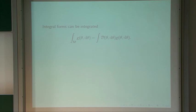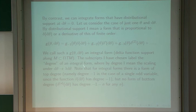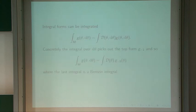Integral forms can be integrated because they have delta-function support and hence compact support with respect to the d-thetas, so there's never any problem with convergence. Concretely, the integral over d-theta picks out the top form part: the integral of a delta function is one, but the integral of a derivative of a delta function is zero. So integration over d-theta picks out the top form part, after which you do the integral over theta as a Berezin integral.